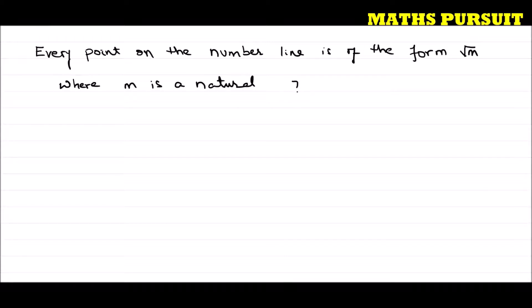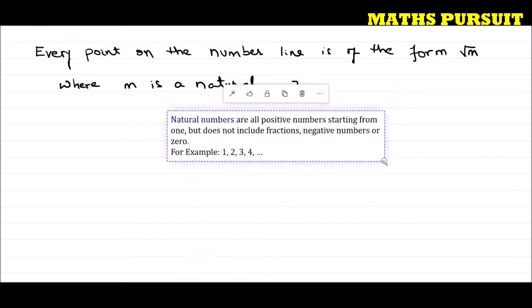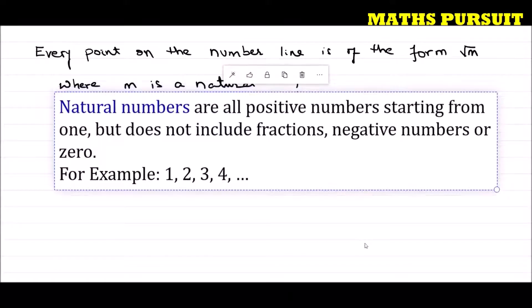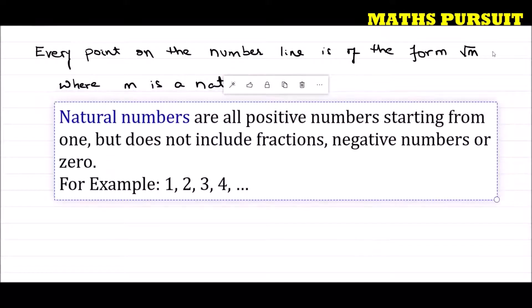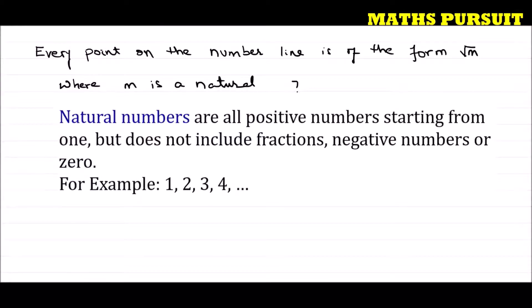Before answering this question, let us find out what a natural number is. Let us brush up our understanding by looking into the definition of a natural number, because if we understand this, it would be easy for us to answer this question. Natural numbers are all positive numbers starting from one, but do not include fractions, negative numbers, or zero.